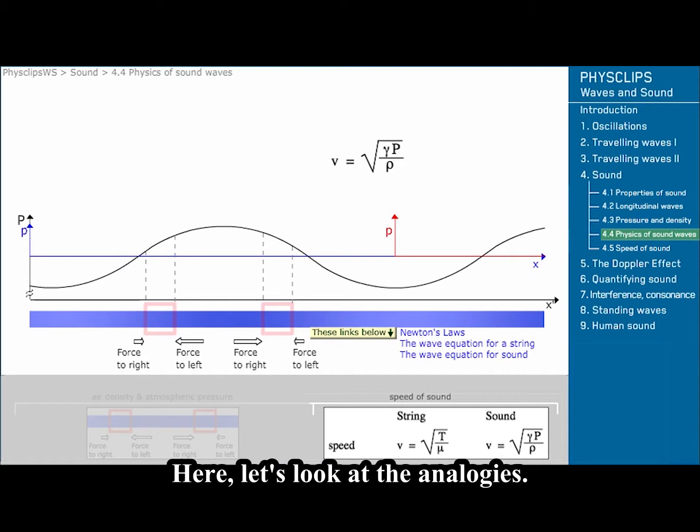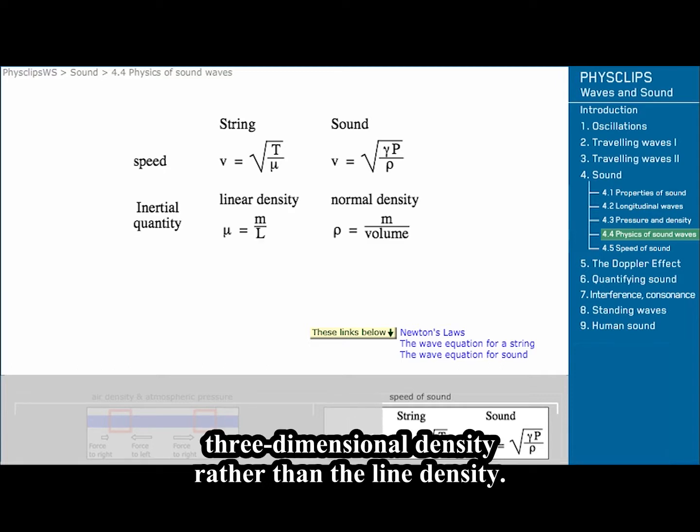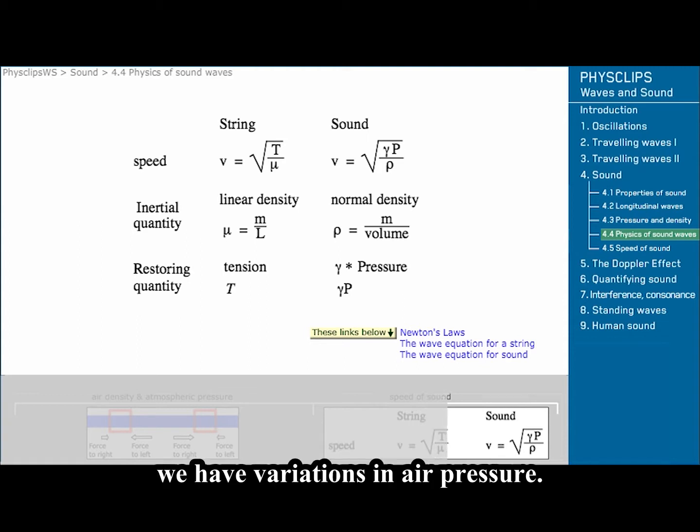Here, let's look at the analogies. The mass of the air provides the inertia, so for a three-dimensional wave, we use the three-dimensional density, rather than the line density. Instead of string tension providing the acceleration, we have variations in air pressure.